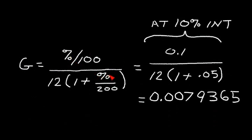So let's take an example. Let's say that we have 10% interest rate and we want to compute G. So 10 divided by 100 is 0.1. We have 12 months times 1 plus 10 divided by 200, 0.05. And when we compute this, we get 0.0079365. So that's the value that we would assign to G to get a 10% interest rate.